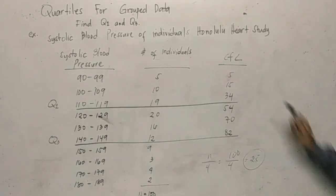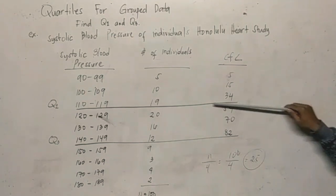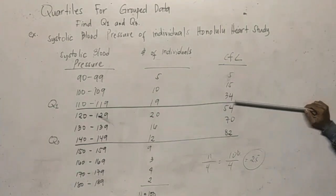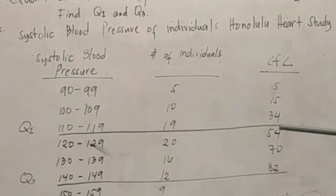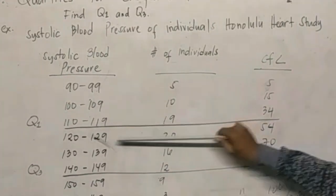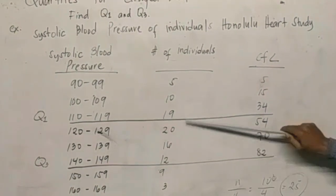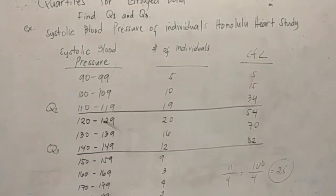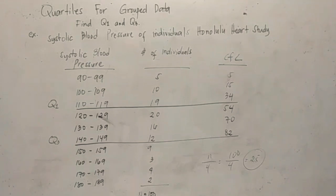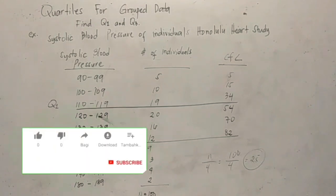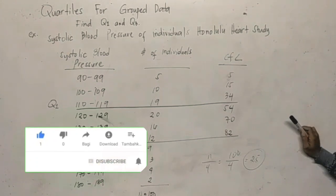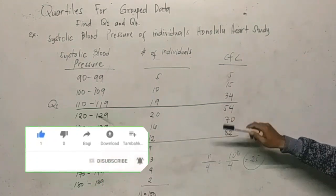Since there is no exact 25, we look at the cumulative frequencies: 15 is less than 25, but 34 is greater than or equal to 25. So we underline the class 110–119, with a frequency of 19. This is our Q1 class. The class interval is 10, because 100 plus 10 is 110, 110 plus 10 is 120, and so on.